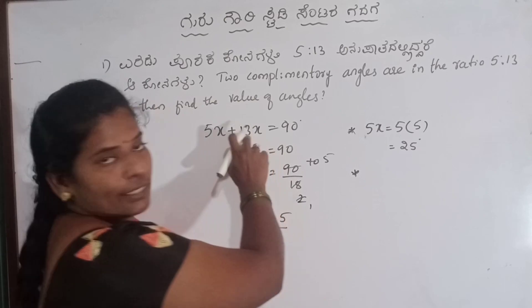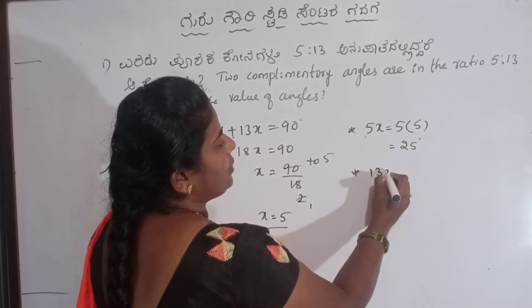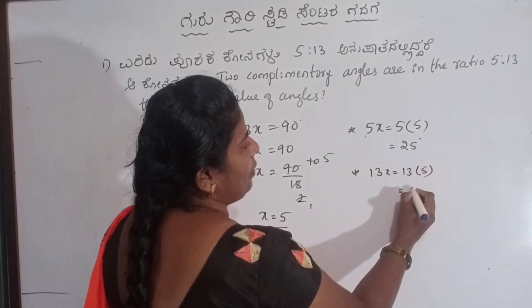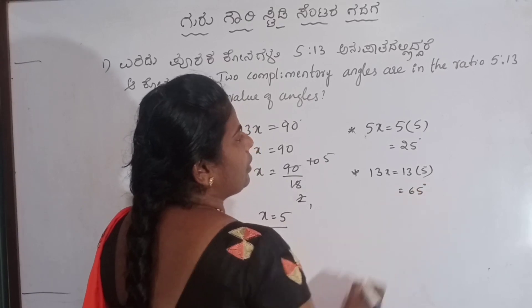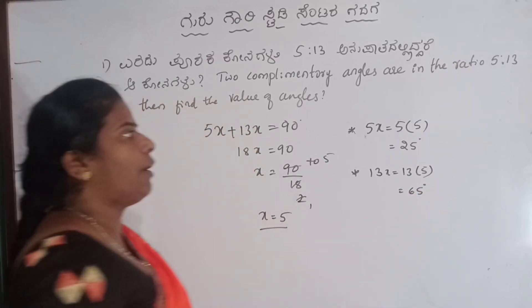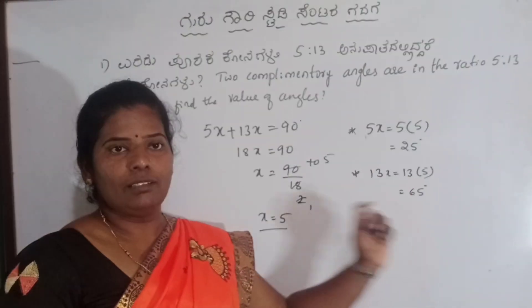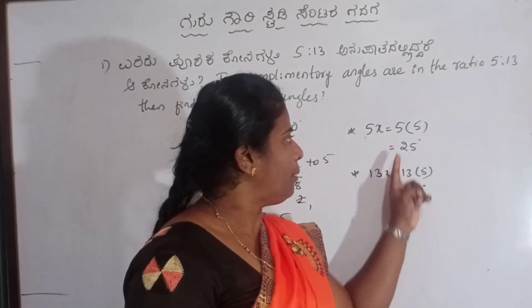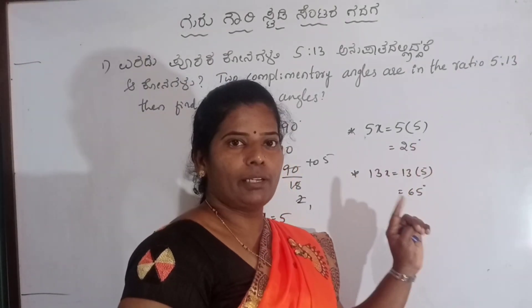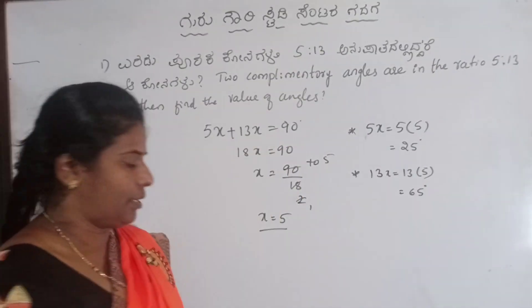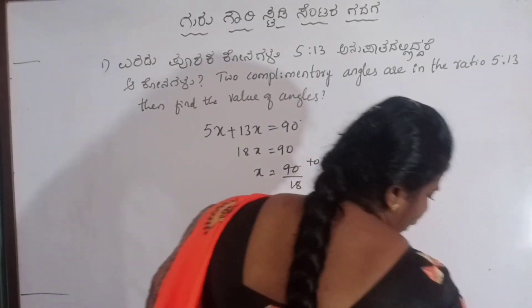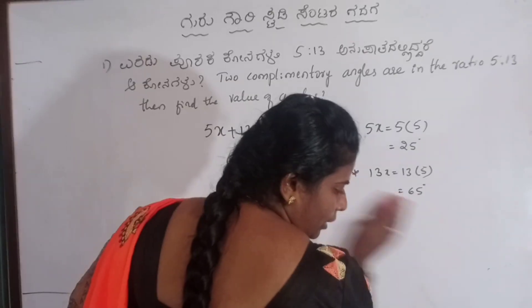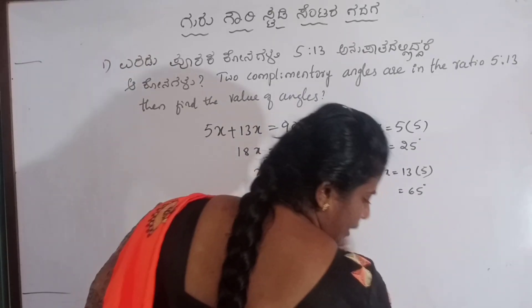3x — how is that? 3x is 15, and then 25 degree and then 65 degree. Verified: add 65 and 25, add to 90 degree. Okay, next problem.